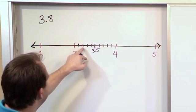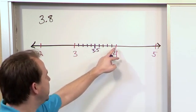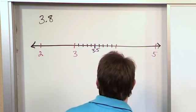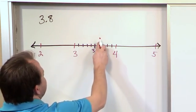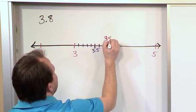This is 3.1, 3.2, 3.3, 3.4, 3.5, 3.6, 3.7, 3.8, 3.9, and 4.0. So our number 3.8, we've already said it a few times. This is 3.5, 3.6, 3.7, 3.8. Our number is actually right here, 3.8.